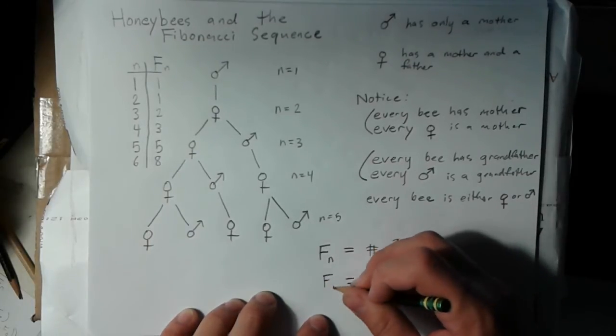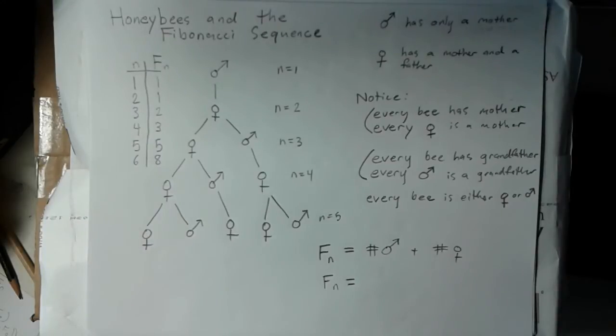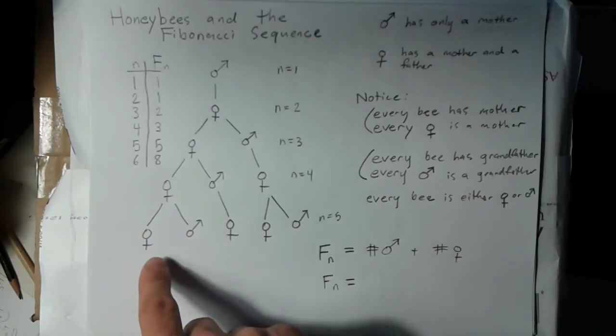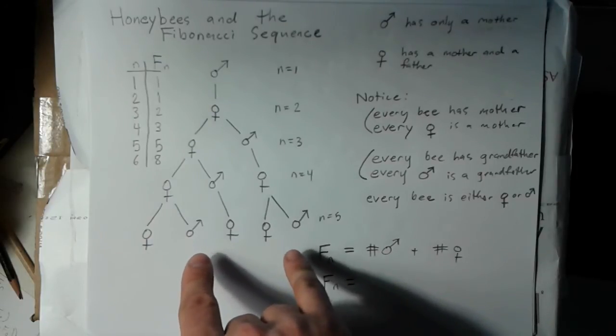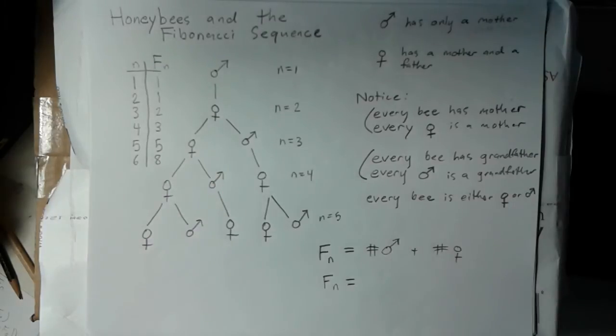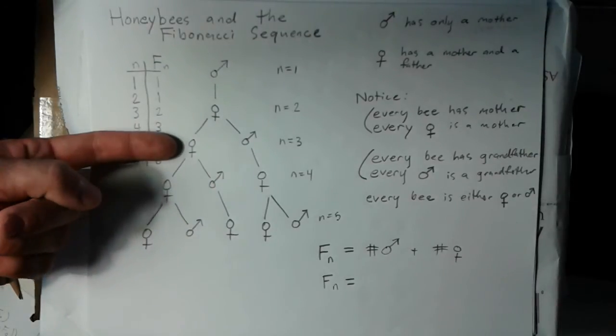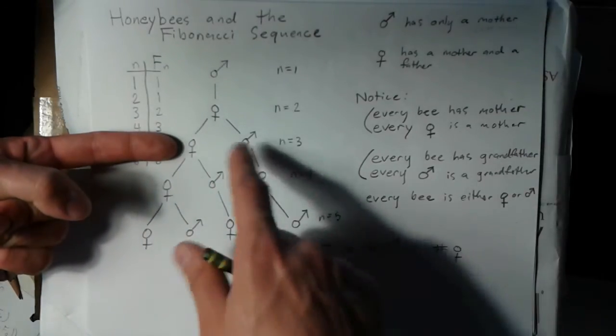If I want to look at the number of males, well I know that in a given generation, every single male is the grandfather of a bee, and that bee must be back in this generation since it's a grandfather, two generations back.